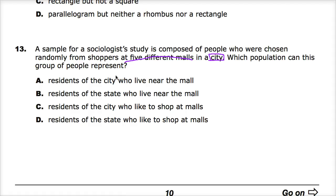Option A: residents of the city who live near the mall. It would cover that, but not necessarily, because some people who live near the mall don't go to it. Option B: residents of the state who live near the mall. Why would that be a good representation of the entire state unless your state happens to be one city? That would be incorrect.